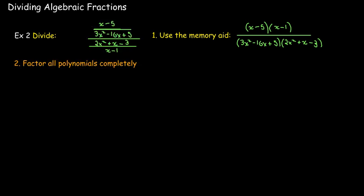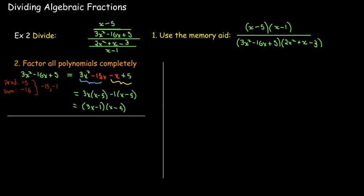The numerator does not require any further factorization. But in the denominator, I need to think about 3x squared minus 16x plus 5. To factor that, I'm going to look for a number or two numbers that multiply to make 15 and add to make negative 16. Those numbers would be negative 15 and negative 1.